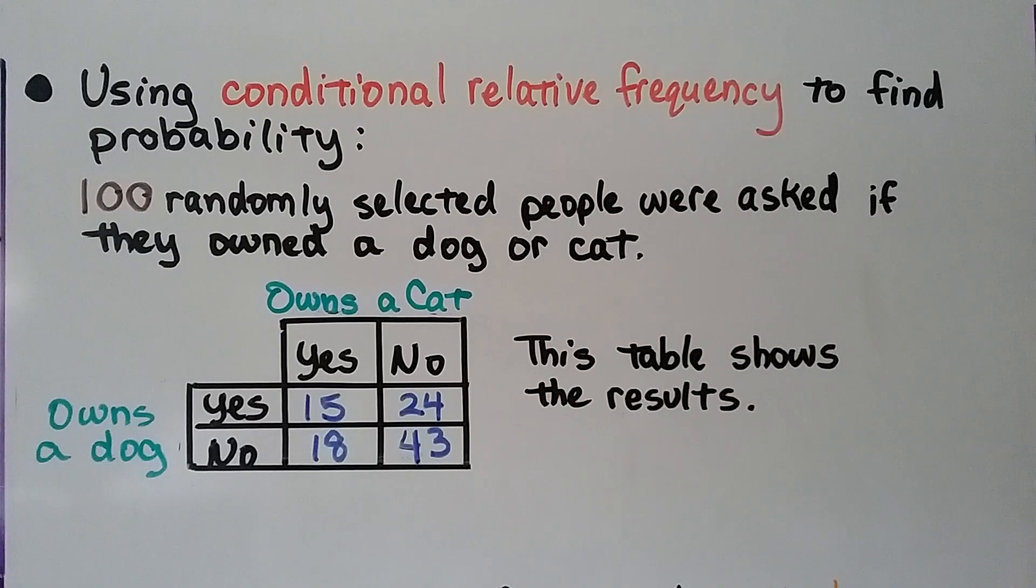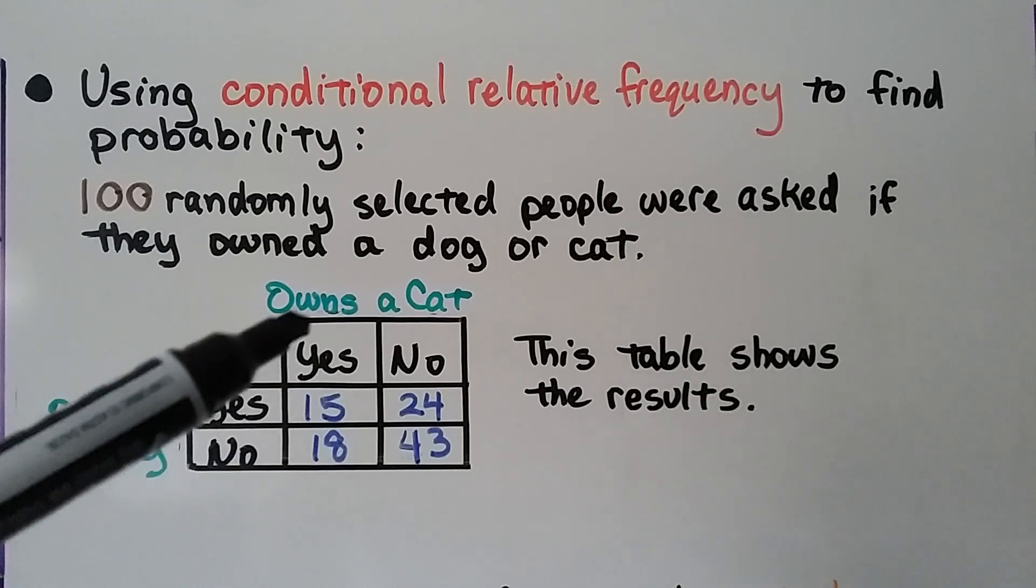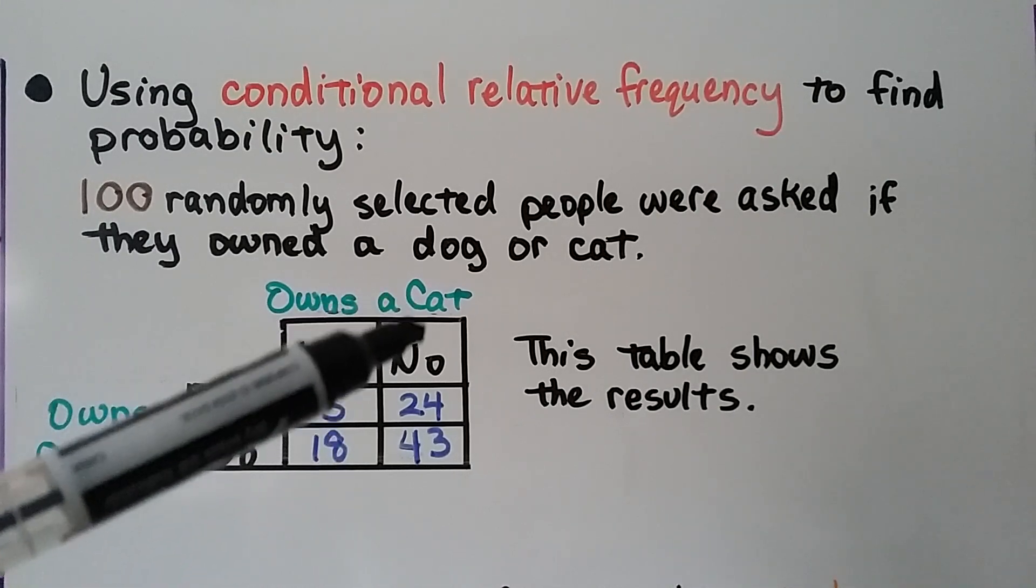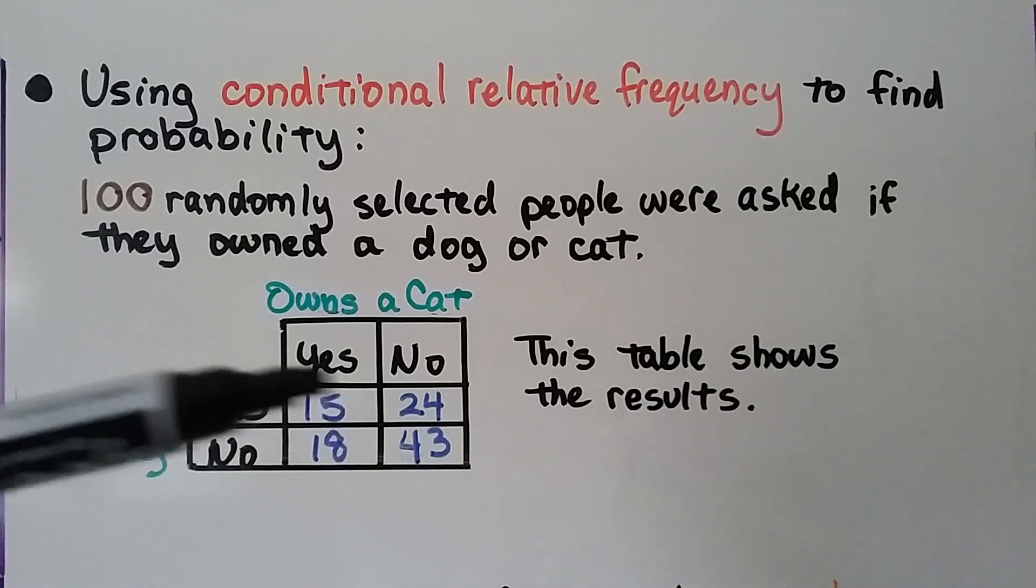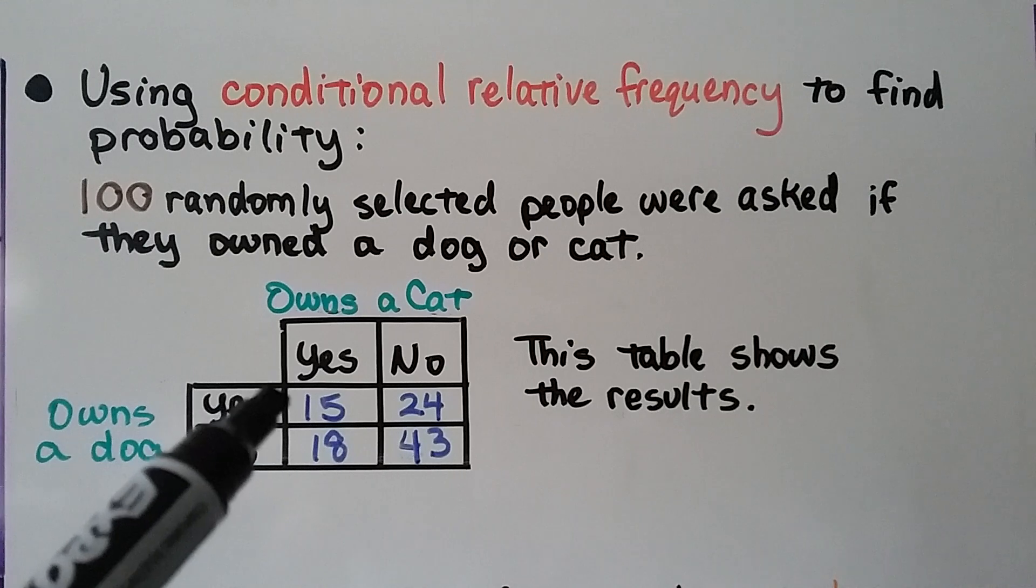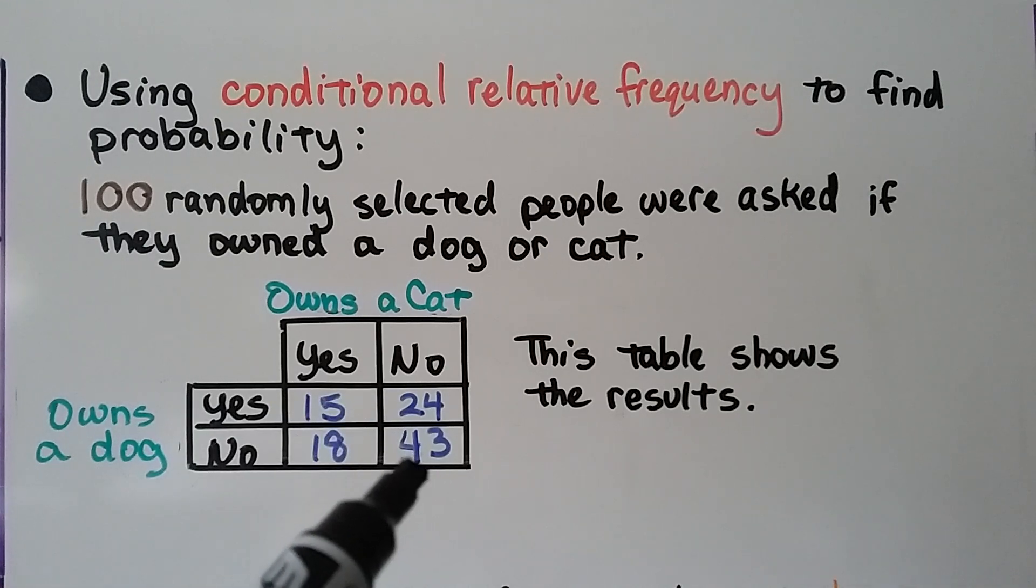We can use conditional relative frequency to find probability. One hundred randomly selected people were asked if they owned a dog or cat, and this table shows the results. So here we have they own a cat, that's a yes, and here's a no. Here's owns a dog, that's a yes, and that's a no. If we total 15 plus 24 plus 18 plus 43, we're going to have a hundred.